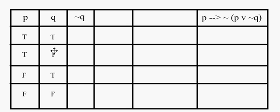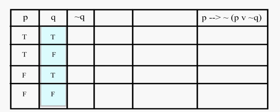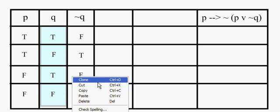So the negation of q — we're going to look at our q column and go down the list and negate. In the first instance, q is true, so the negation is false. In the second instance, q is false, so the negation is true. In the third instance, q is true again, so the negation is false. And in the last situation, q is false, so the negation is true.